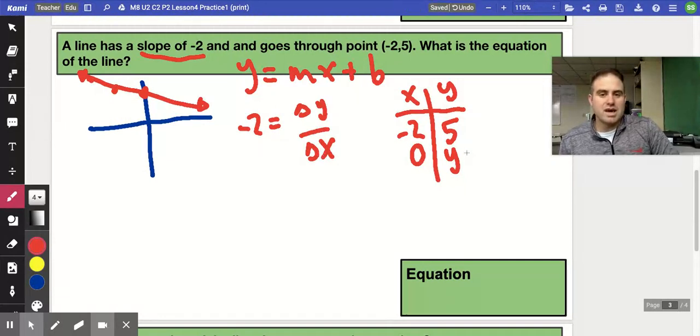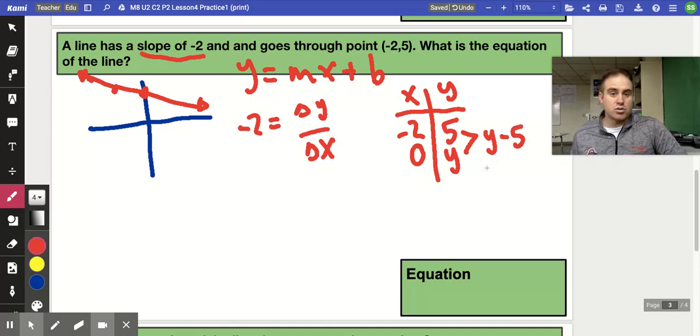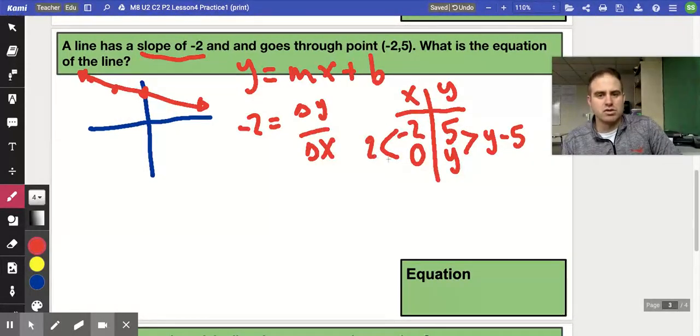Now in this case, our change in y, we don't know how much it's changing because we don't know what our y value is. So that's y minus 5. The difference between y and 5 is y minus 5. How much does it change from negative 2 to 0? It goes up by 2. 0 minus negative 2 is positive 2.